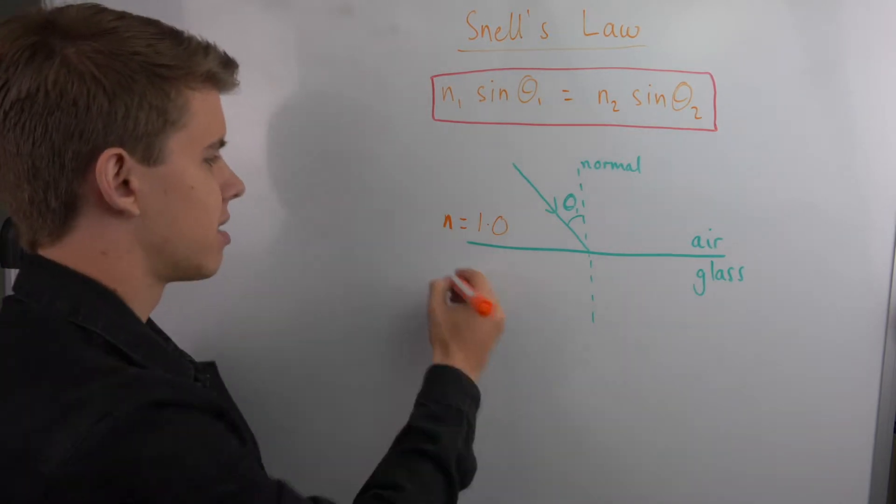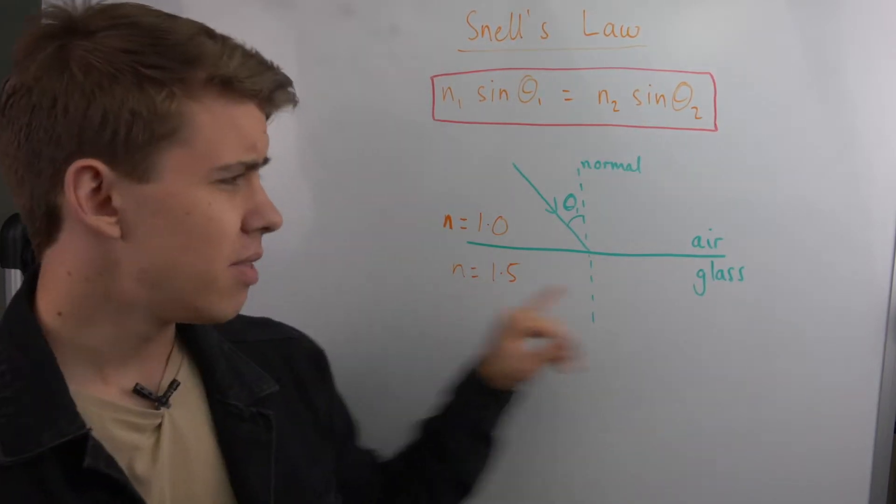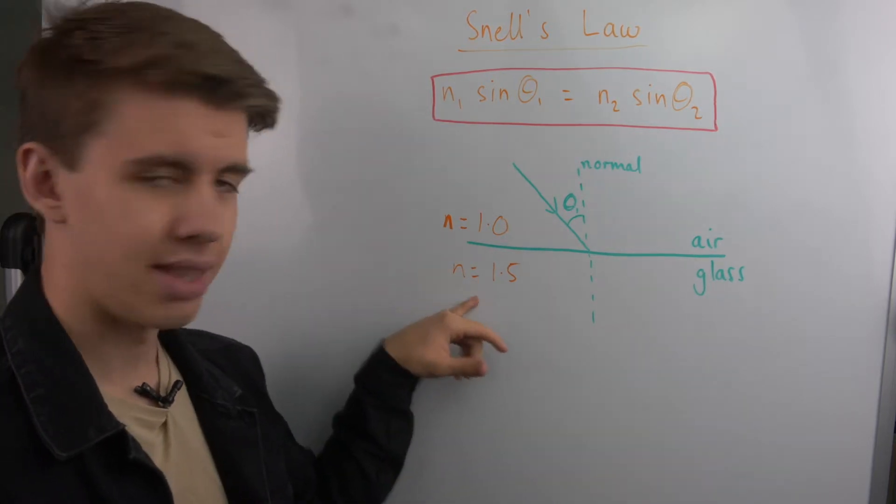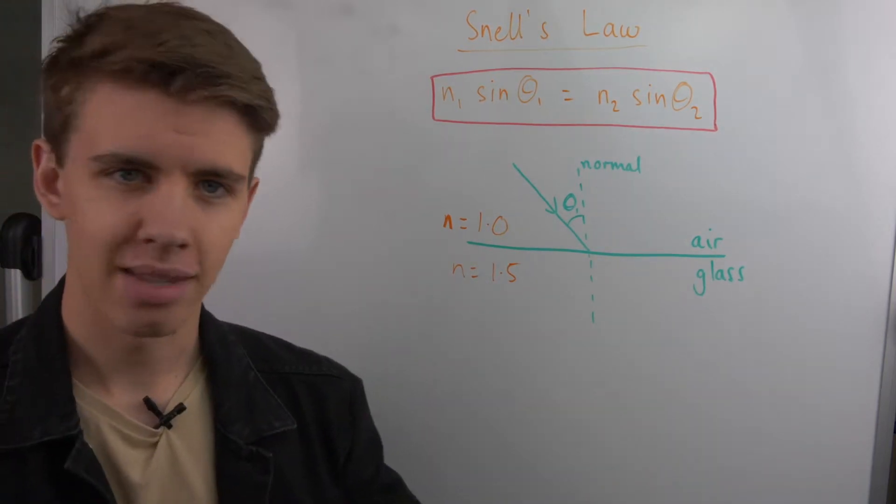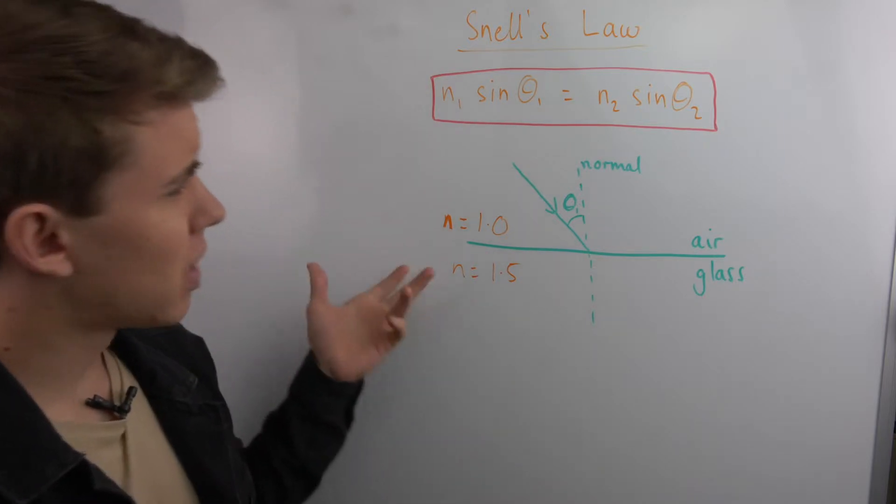The refractive index of glass will be something like 1.5. The value of the second one will always be given to you, or they'll ask you to calculate that and they'll give you all your other values. You don't have to memorize the refractive index of glass, but you do have to memorize the refractive index of air.